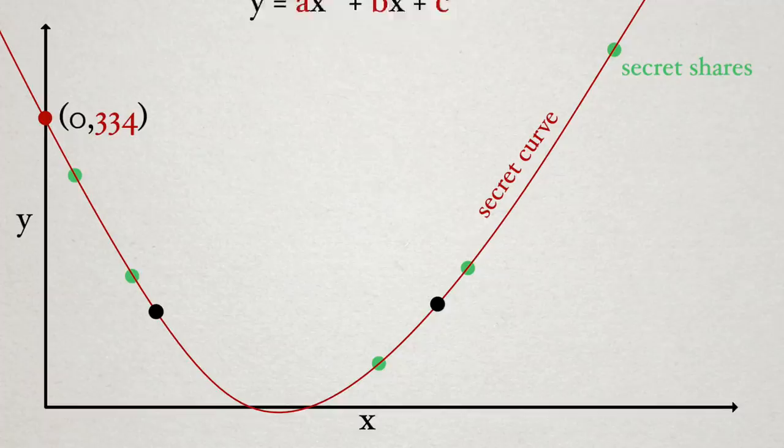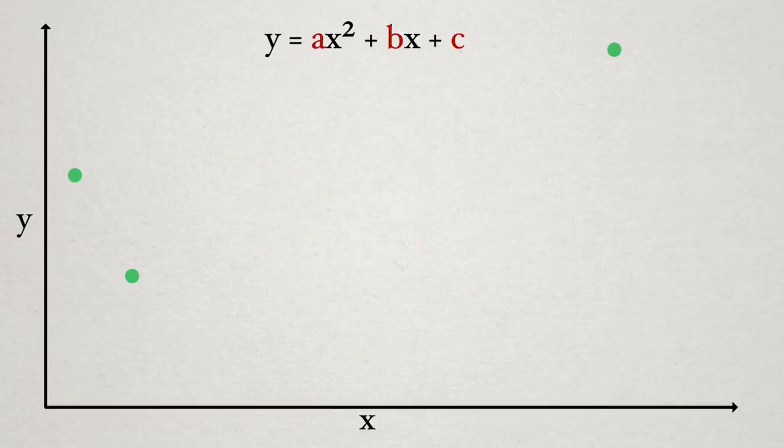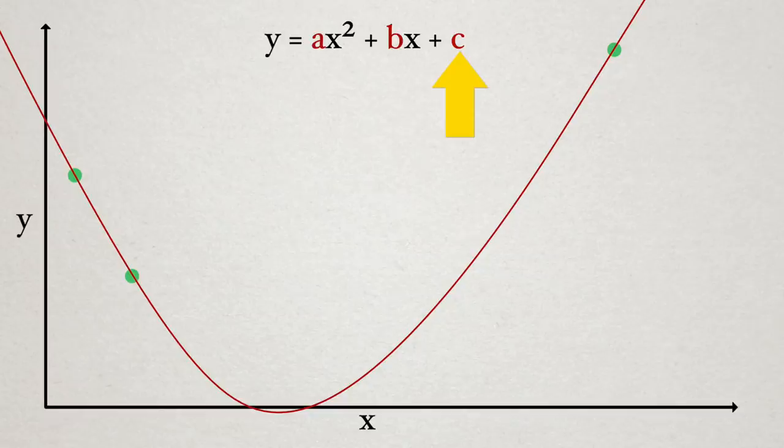Recall that the equation for a parabola takes the following form, and since this equation has 3 parameters, a, b, and c, we need any 3 points along the curve to solve for a given parameter. So, ignoring everything and given any 3 shares, we can fully recover the curve. And then we can solve for c, which is the secret point or Y intercept, to get back the secret number.